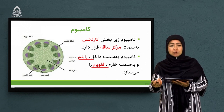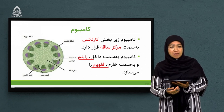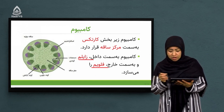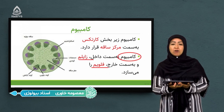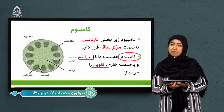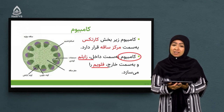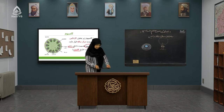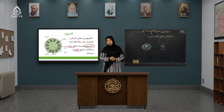فلویم همین غذای ساخته‌شده را از برگ‌ها می‌گرفت و به ساقه و شاخه‌ها و حتی انساج ریشه انتقال می‌داد. خود این انساج انتقالی توسط کامبیوم ساخته می‌شد. موقعیت این انساج انتقالی بسیار مهم است که در سوالات کنکور بارها تکرار شده که جهت ساختن زایلم‌ها و فلویم‌ها چگونه خواهد بود.